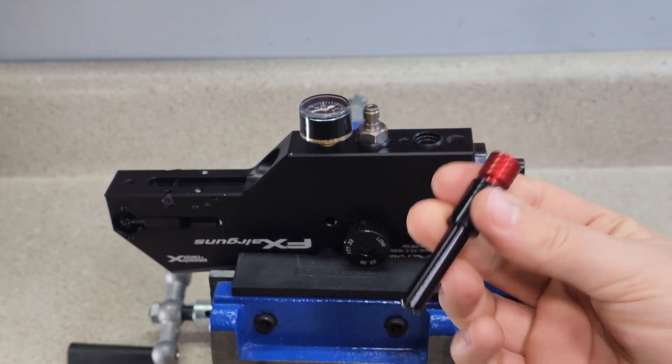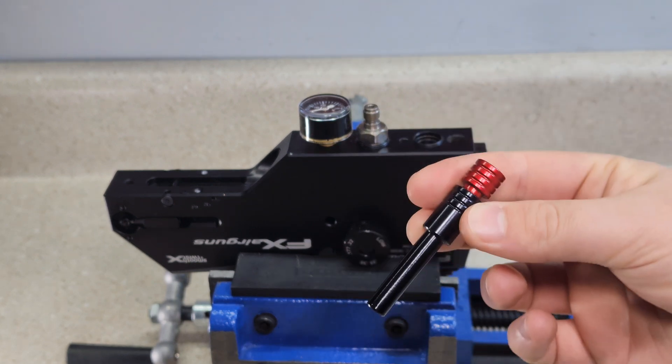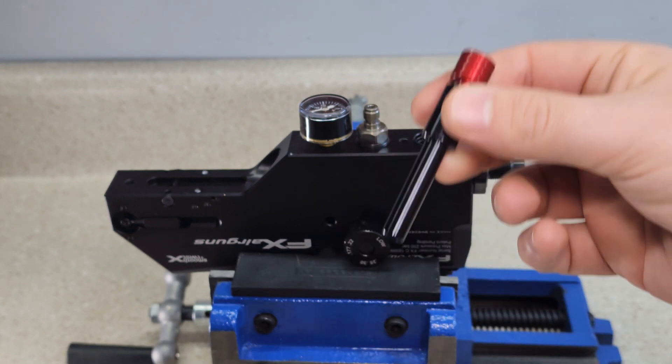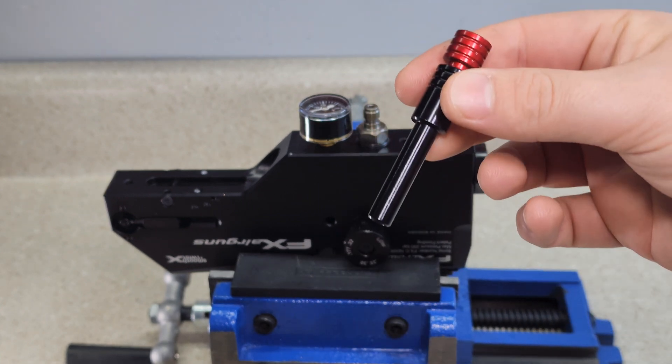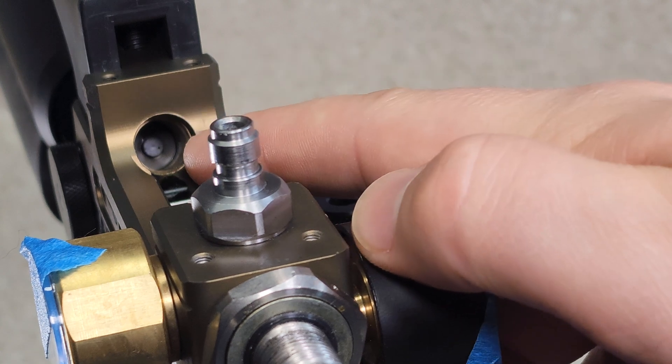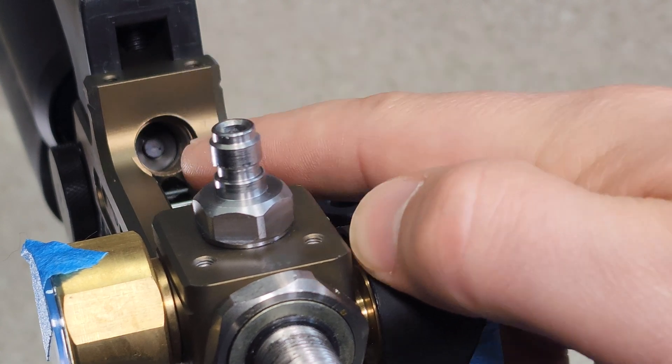So there you go, that is the regulator piston removal and installation tool or just the regulator piston tool. I'm about to jump over and show you how to do it on an Impact and a Maverick. Okay so you can see there, there's the regulator piston and washer still inside this Impact.